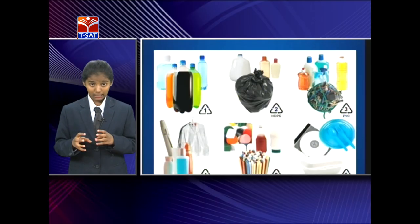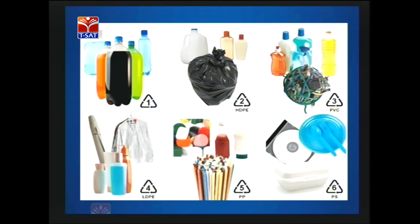Among all the plastic types we have seen, we should avoid types 3, 6, and 7. Type 3 is PVC — polyvinyl chloride. Type 6 is PS — polystyrene. Type 7 is PC — polycarbonate. Types 1, 2, 4, and 5 can be used more safely.